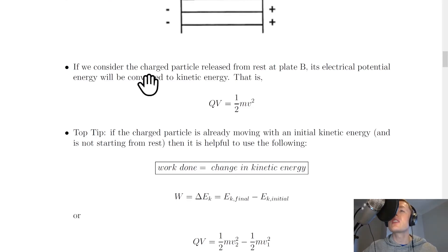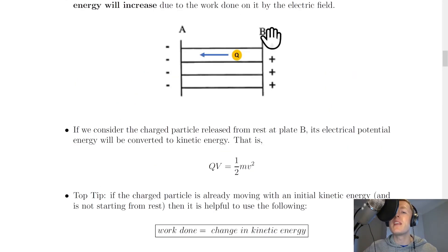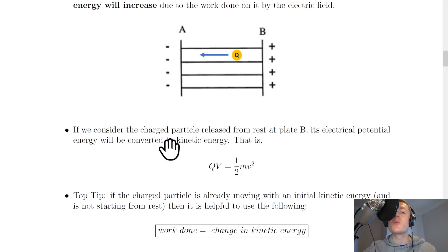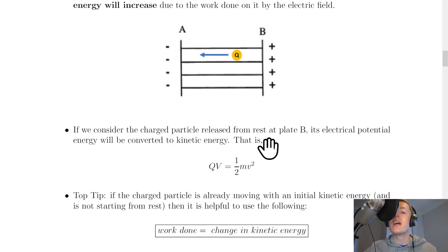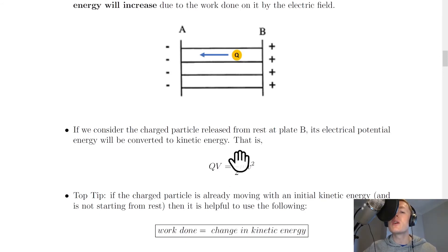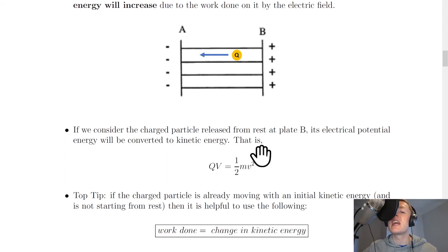If we consider the charged particle released from rest at plate B, its electrical potential energy will be converted to kinetic energy. That is, from W equals QV, we get QV equals a half mV squared. In other words, the work done is equal to the kinetic energy, because our initial kinetic energy was zero.